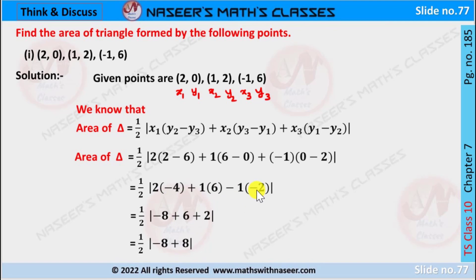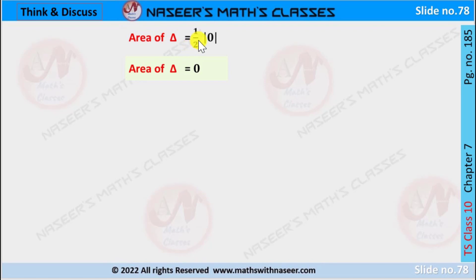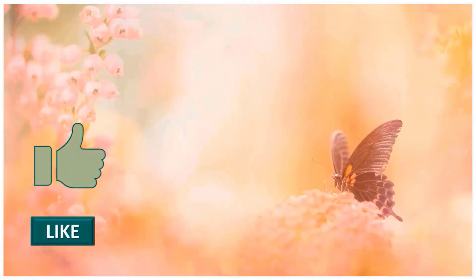1 times 6 is 6, and minus times minus is plus, so 1 times 2 is 2. Therefore 6 plus 2 is 8, and −8 plus 8 equals 0. The area of the triangle equals one-half times mod(0), and mod(0) is 0, so 0 times one-half is 0. Therefore the area of the triangle is 0 for the given points.